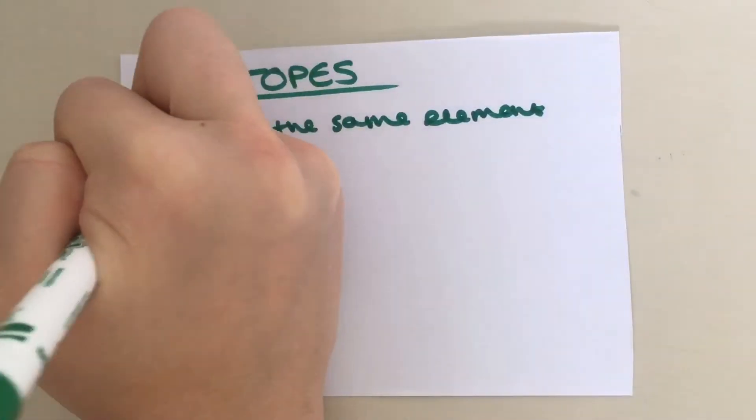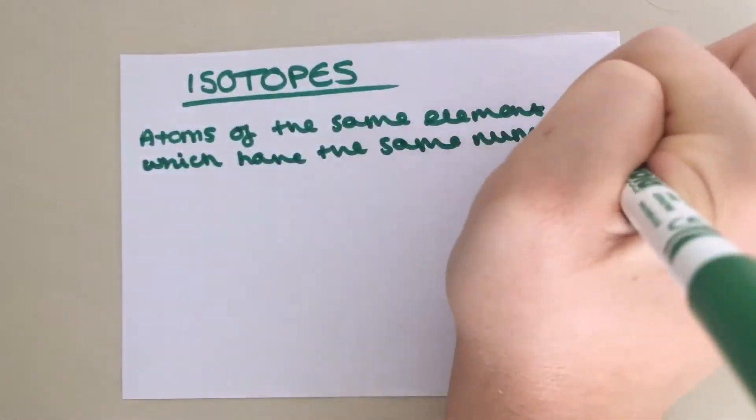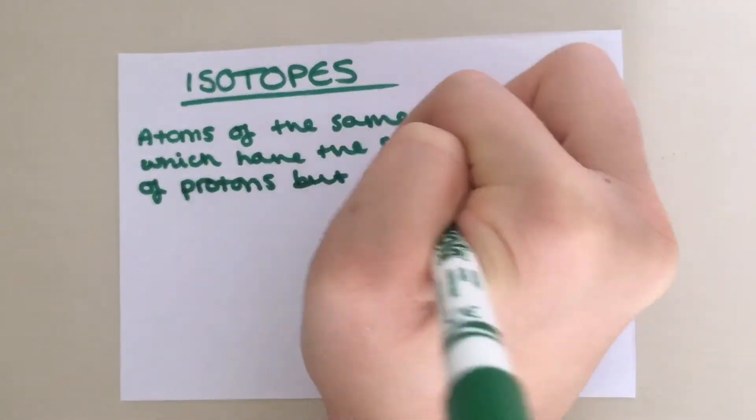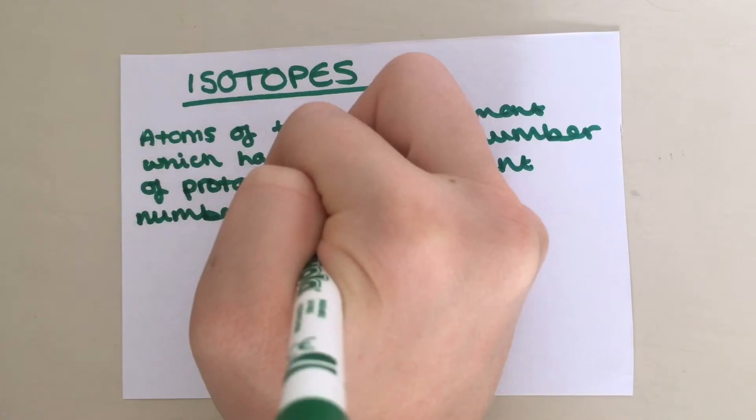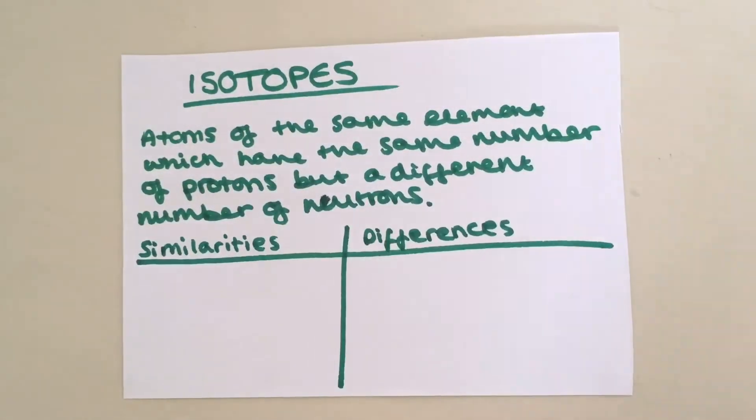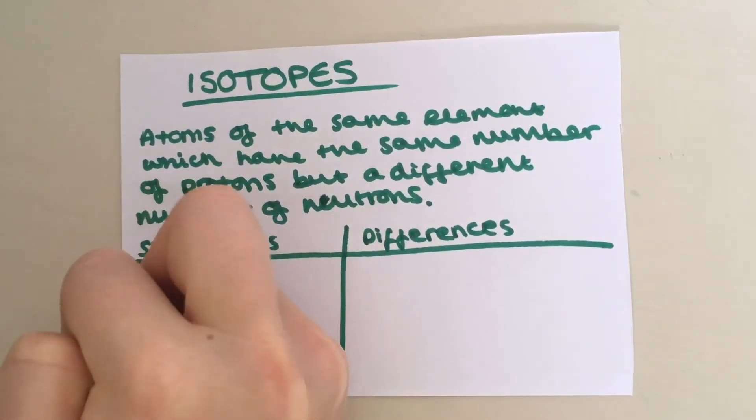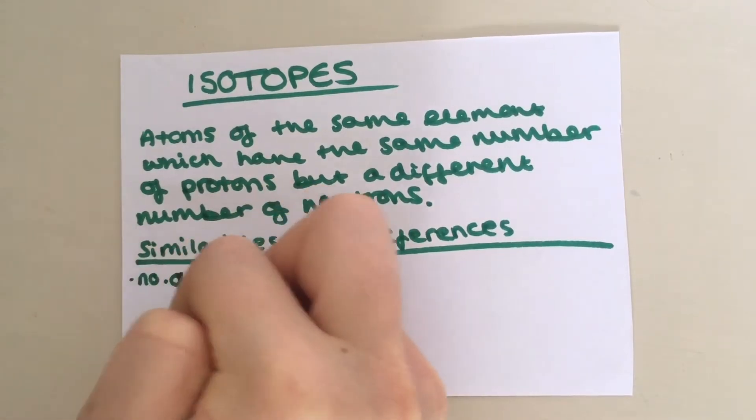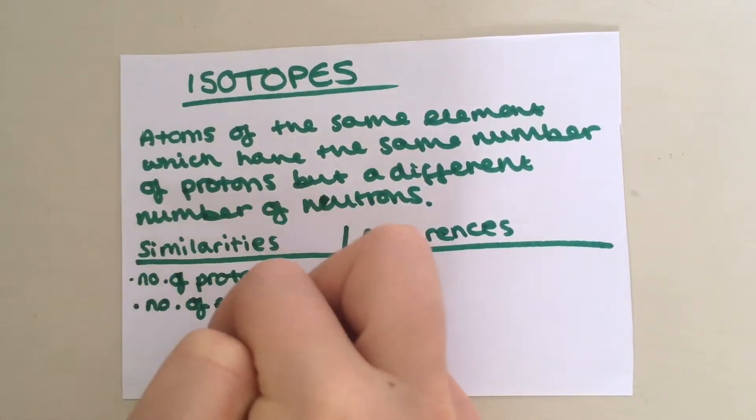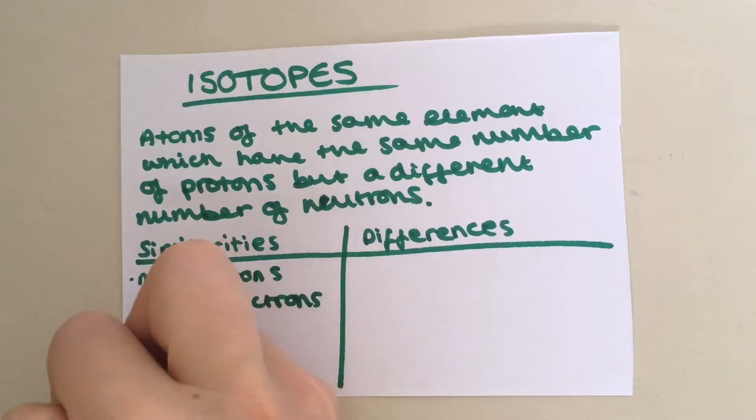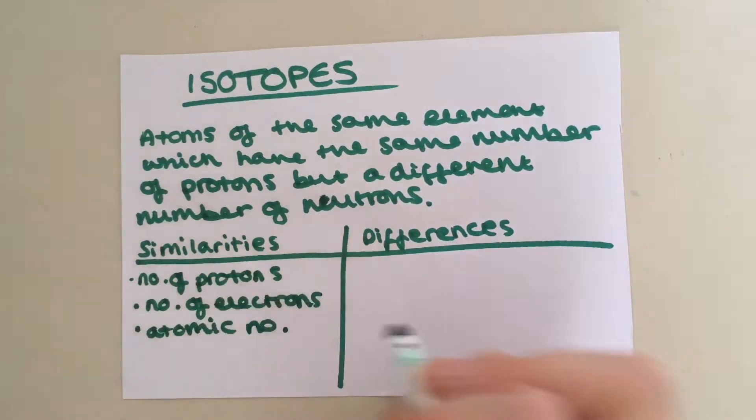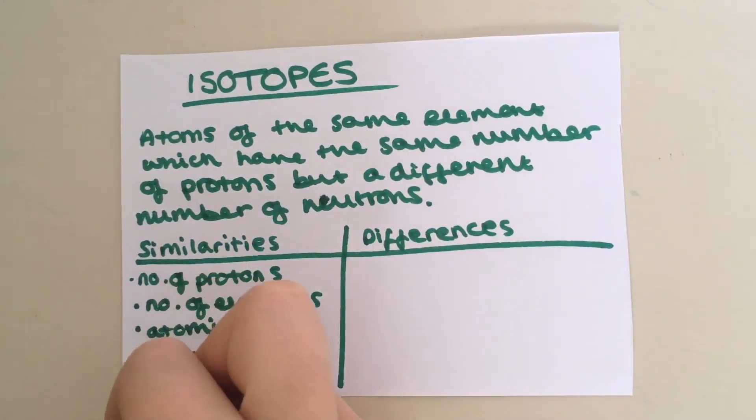Isotopes are atoms of the same element which have the same number of protons in the nucleus but a different number of neutrons. There are a number of similarities between isotopes of the same element. Firstly, they have the same number of protons. Also, they have the same number of electrons. They have the same atomic number and they have similar chemical properties.